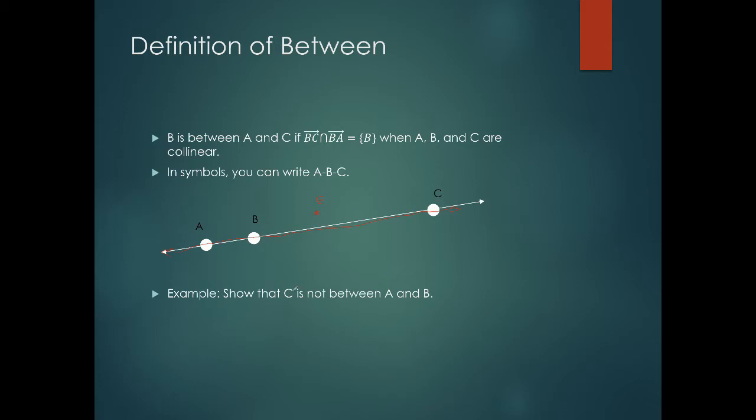We would have to check CA intersection CB. If C were between A and B, this answer would just be C. As we look at CA which starts at C and goes this direction, intersection CB, you actually get the same ray. So the intersection is the entire ray, not just point C.